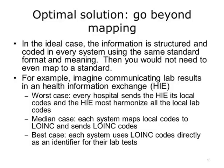In the ideal case, the information is structured and coded in every system using the same standard format and meaning — then you would not need to even map to a standard. For example, imagine communicating lab results in a health information exchange, or HIE. In the worst case, every hospital sends the HIE its local codes, and the HIE must harmonize all the local lab codes. In the median case, each system maps local codes to LOINC and sends LOINC codes. But in the best case, each system uses LOINC codes directly as an identifier for their lab tests. The best case is not always possible, since it needs to be implemented when systems are first designed. Also, sometimes there is a good reason to have local, non-standard structure or coding.